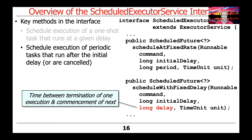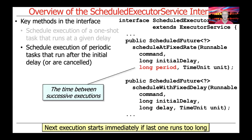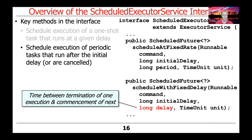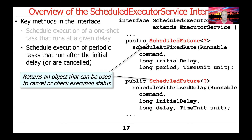For that reason there's also another method called scheduleWithFixedDelay, which uses the delay to indicate the time between the termination of one execution and the commencement of the next. However long the command takes to run, when it's done, scheduleWithFixedDelay will wait that amount of time before the next task runs. scheduleAtFixedRate gives you more of a pulse — like a heartbeat that beats at a certain interval — whereas scheduleWithFixedDelay waits until the previous task is done and then schedules the next task at that delay. Both methods return ScheduledFutures that can be used to cancel or check execution status.